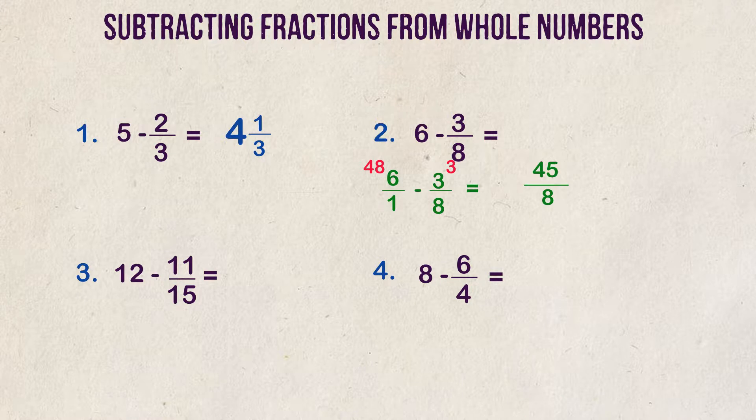8 can go into 45 a total of 5 times and that leaves a remainder of 5. That remainder goes over the denominator and our answer is 5 and 5 eighths.